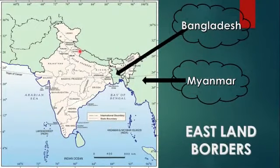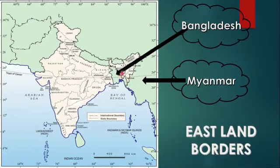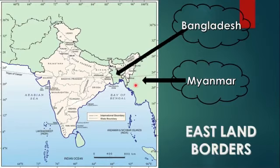There are two border countries in the eastern part of India. One is Bangladesh — its border starts from West Bengal all the way to Mizoram. The second country is Myanmar, whose border runs through Arunachal Pradesh, Nagaland, Manipur, and Mizoram.